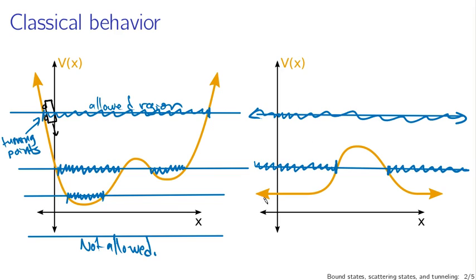A cart that does not have enough kinetic energy to clear the hill will roll up the hill, stop, and turn back. A cart rolling in from the other direction would roll up the hill, stop, and turn back. So that's what we would expect a classical object like a cart to do, using the potential energy V(x) as an analogy for gravitational potential energy.